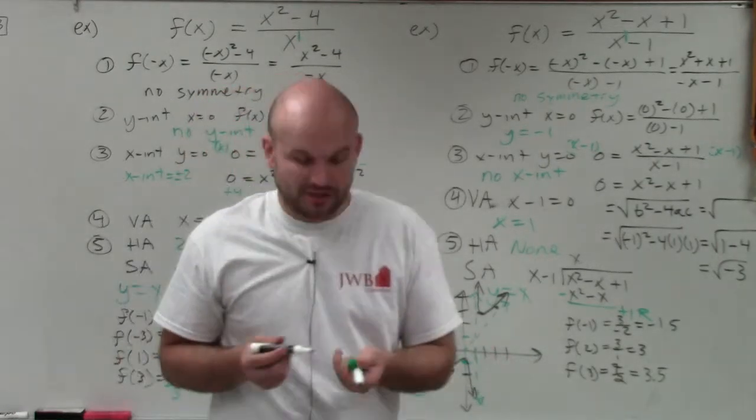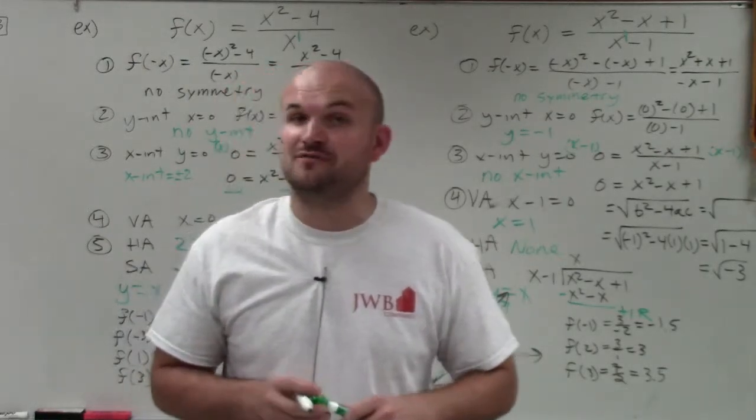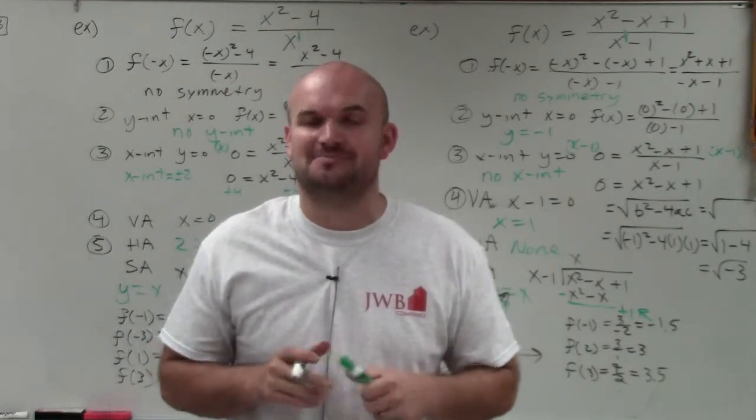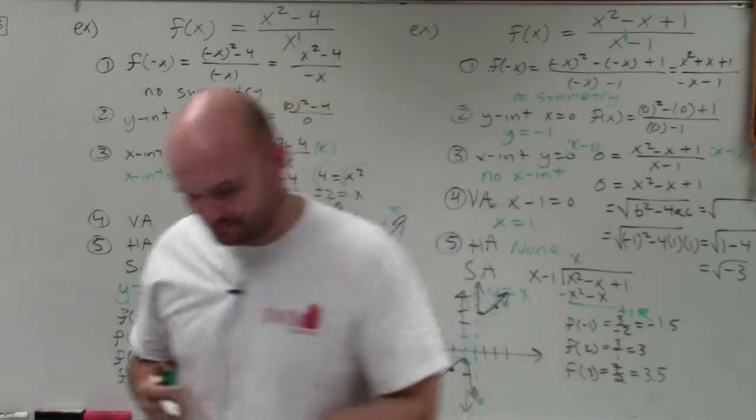So there you go, ladies and gentlemen. That is how you graph a rational function with slant asymptotes. Thanks.